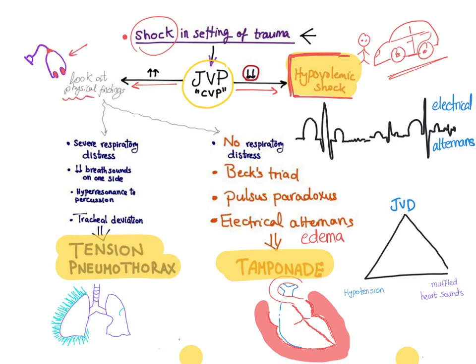If there is severe respiratory distress, decreased breath sounds on one side of the chest, hyper-resonance to percussion, and tracheal deviation on physical exam, then this is tension pneumothorax. Tension pneumothorax is an accumulation of air in the pleura — it pushes the trachea to the opposite side, decreases breath sounds as the lung collapses, and causes hyper-resonance to percussion because air is hyper-resonant.